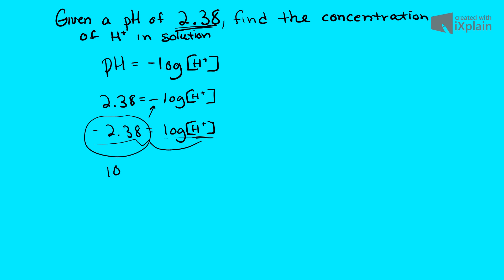So we get 10 raised to the negative 2.38 power. The reason why is because the antilog is equal to 10 raised to the power of whatever you are looking for. In this case, it is negative 2.38.